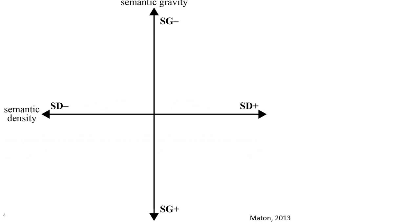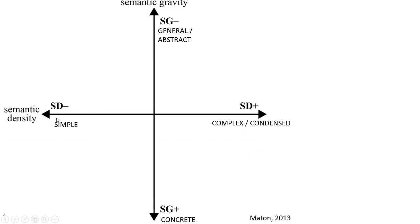The semantic plane has two axes. First, semantic gravity, which describes how concrete or abstract something is. The greater the semantic gravity, the more concrete the concept. When we decrease the semantic gravity, it becomes more abstract. Second, semantic density: how much meaning is packed into a concept or term. Concepts with low semantic density are quite simple, whereas concepts with high semantic density are more complex and condensed, with lots of interlinks between different topics.